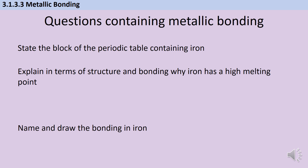Finally, let's have a little look at some exam-style questions. You might want to pause the video at this point and write down what you think the answers are, and then you can check whether you've got them right or not. Firstly, we're asked to state the block of the periodic table containing iron. The block is going to be named according to where the outer shell electrons of this element are. And of course, they're in a d-orbital, so iron is in the d-block.